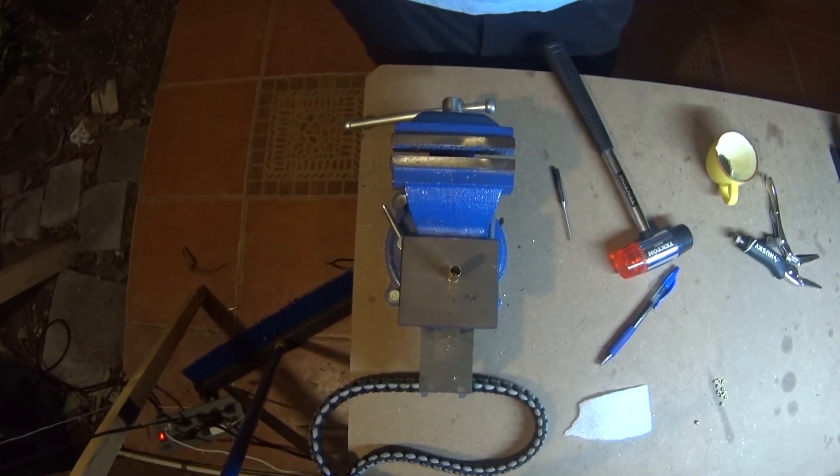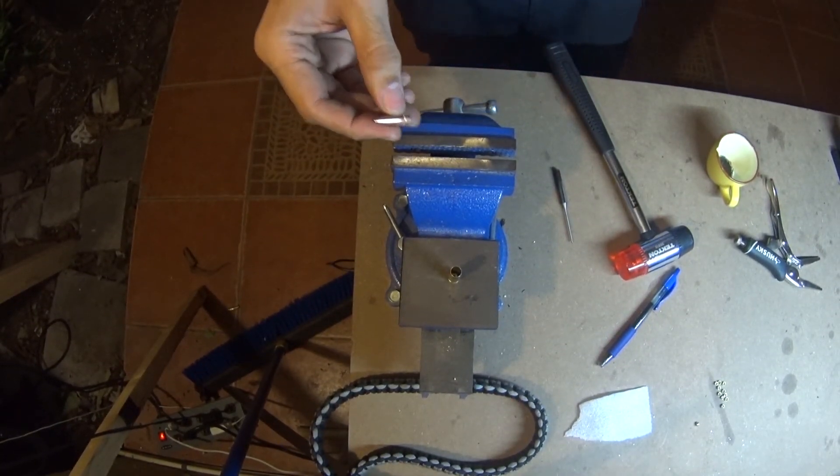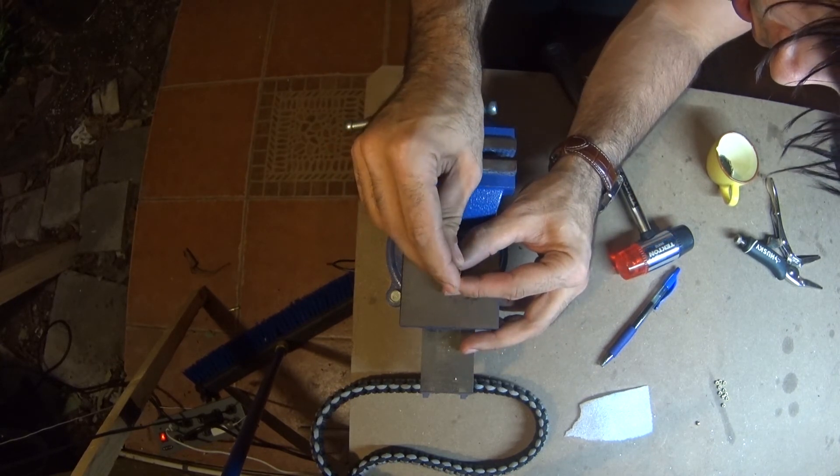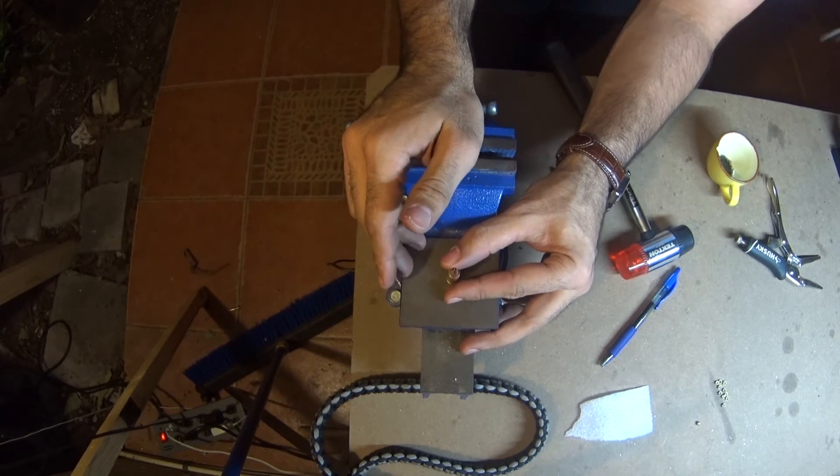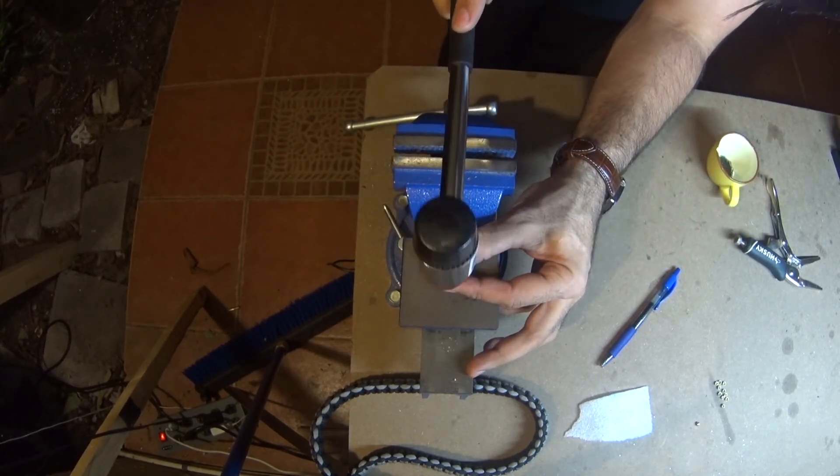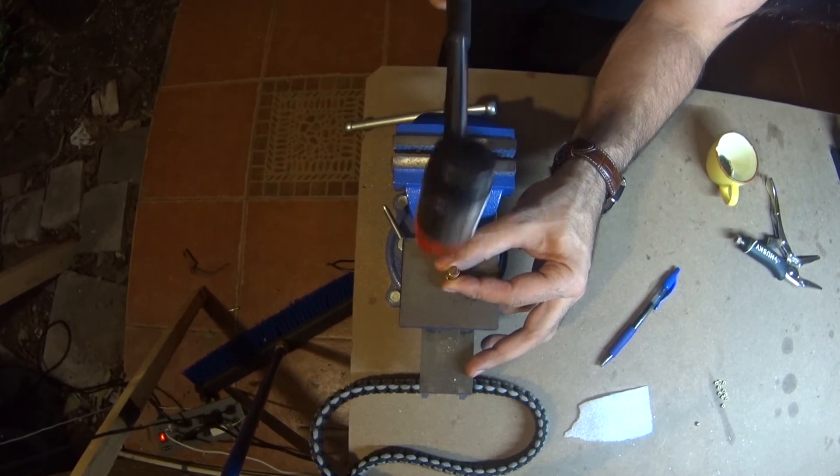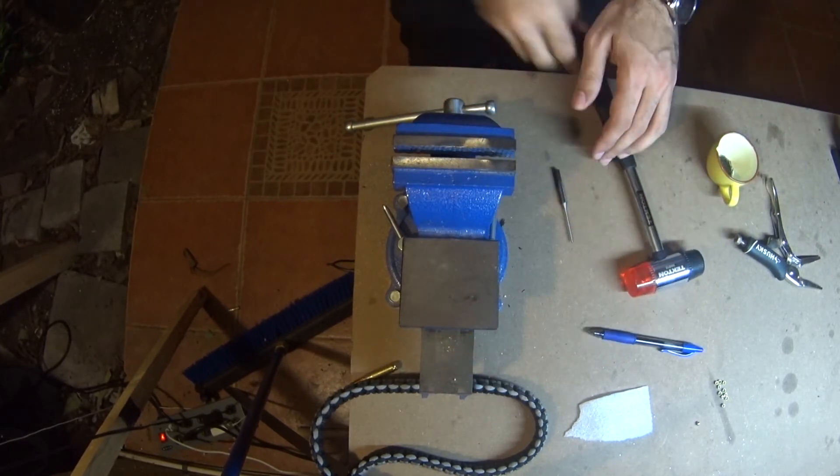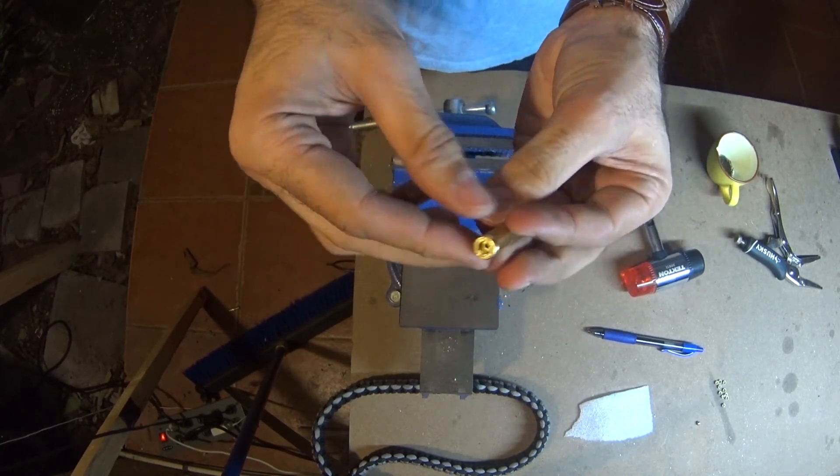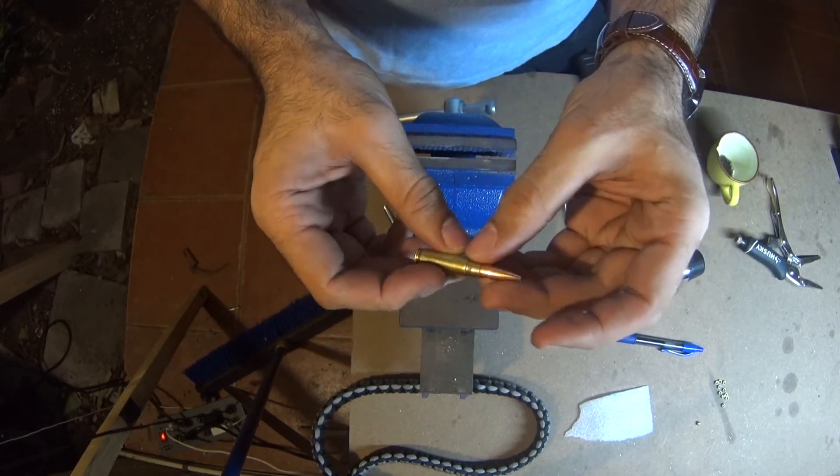So the next and final step is basically to go ahead and get the bullet. Look at the actual bullet itself. Push down as hard as you can where the crimping is. Get the rubber mallet. Just tap it down. So you have the crimping there. The bullet's not going to come out by itself anymore. And there you go. You got a dummy round.